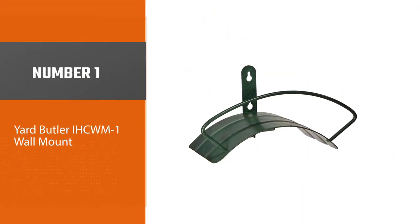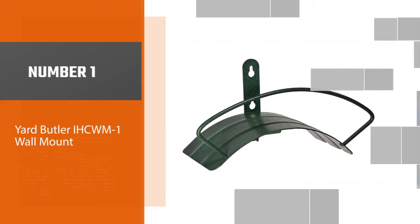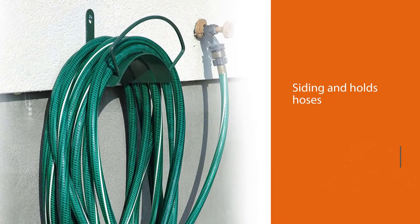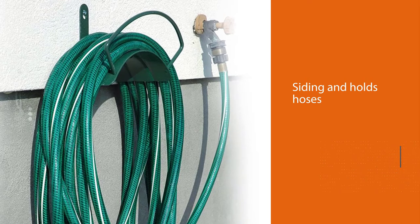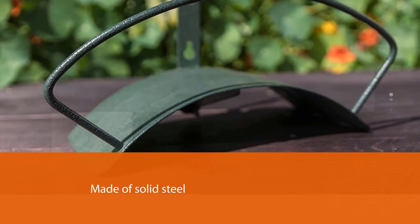Number one, most popular: Yard Butler IHCWM-1 wall mount. Hose reels don't have to be fancy or expensive. We're big fans of this pared down option by Yard Butler, which mounts to a fence post or siding and holds hoses as long as 100 feet.